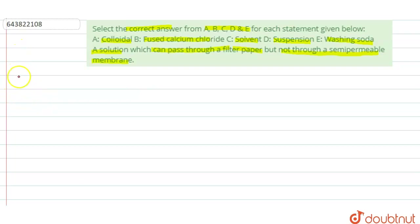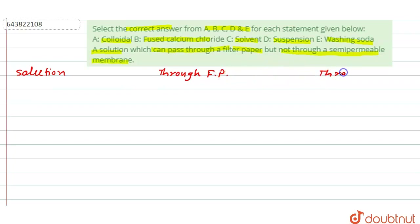I am writing here — one column is 'Solution', the second is 'Through Filter Paper' (FP means filter paper), and the third is 'Through SPM' (SPM means semi-permeable membrane).